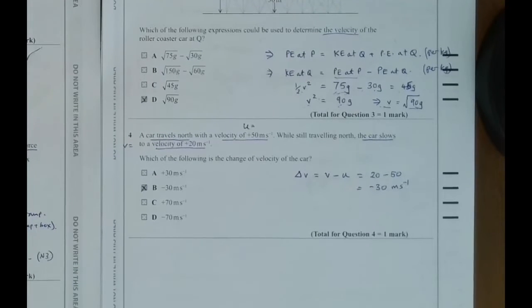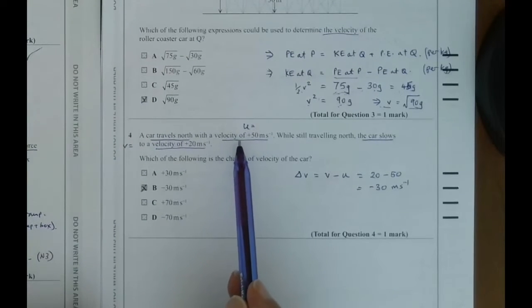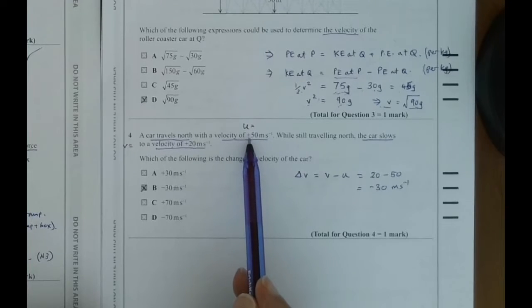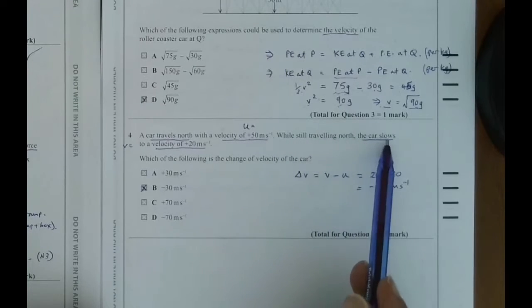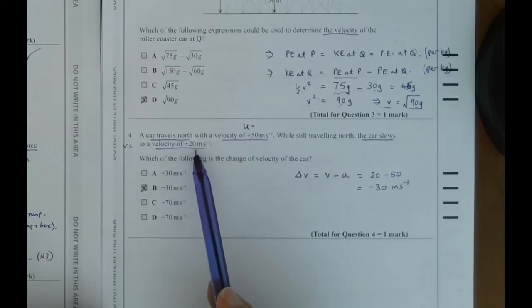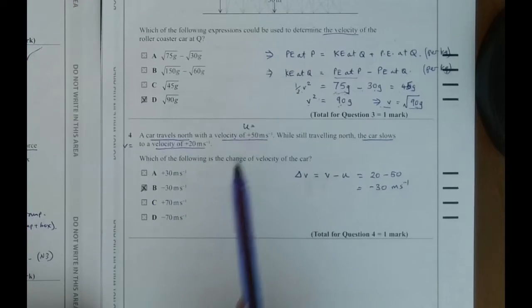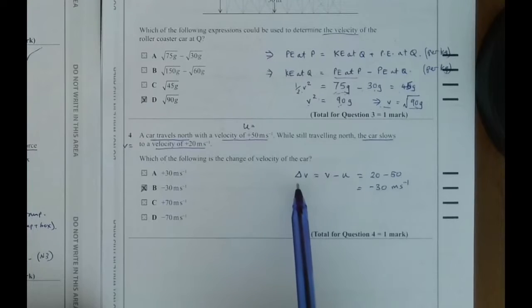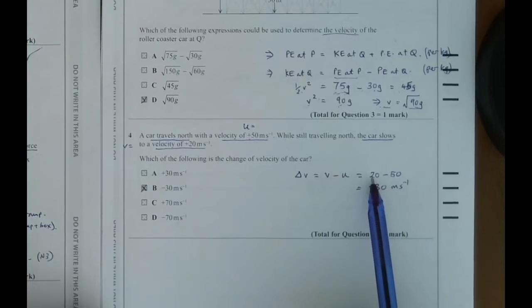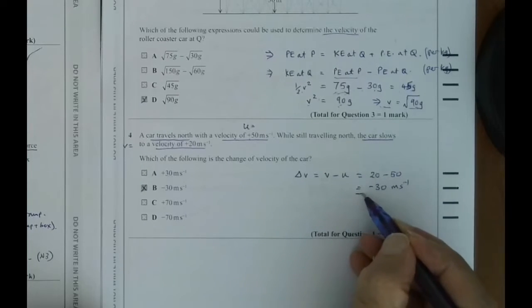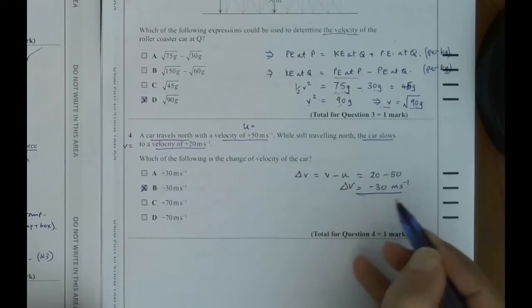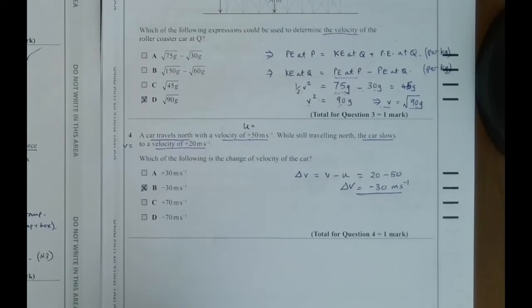Question four. A car travels north with a velocity of 50 metres per second, and they've given you a plus sign, so we'd have to think of it in terms of vectors. While still travelling north, the car slows down to a velocity of 20 metres per second. So which of the following is the change in velocity of the car? Change in velocity is V minus U. 20 minus 50 means it's slowed down. So the answer of 20 minus 50 gives you a change in velocity of minus 30 metres per second. So B is the correct answer.